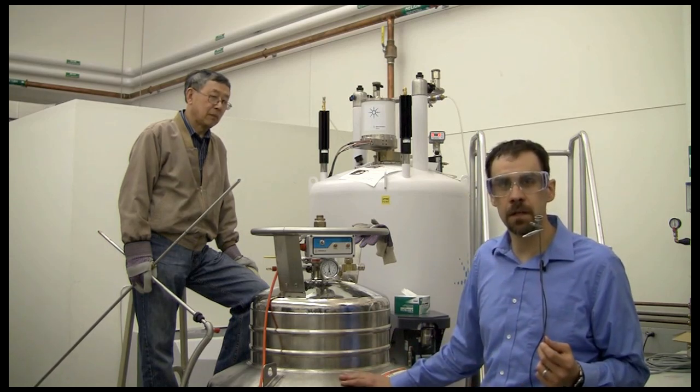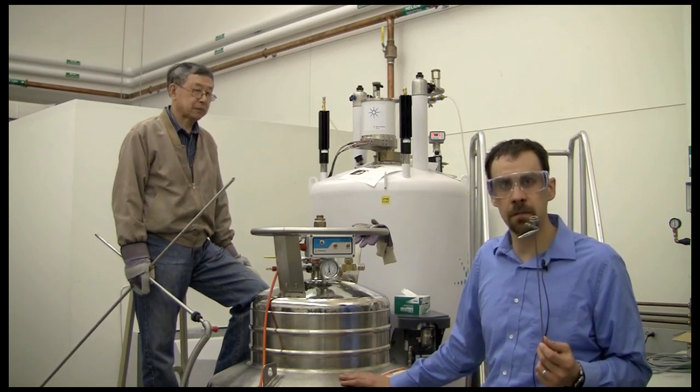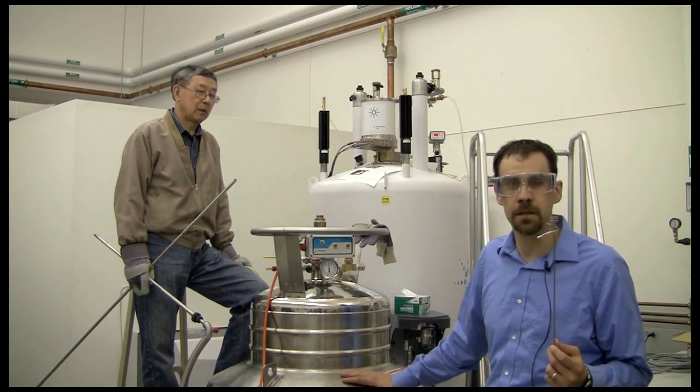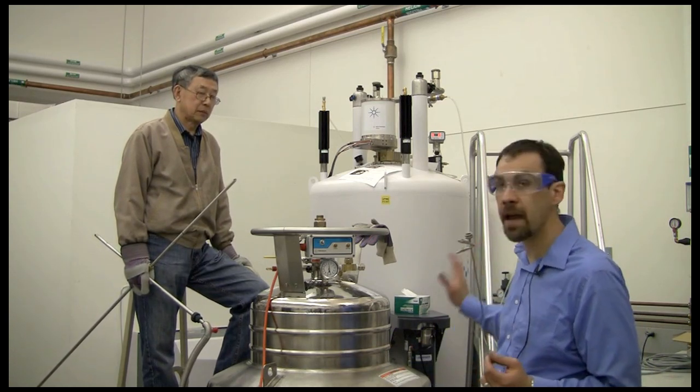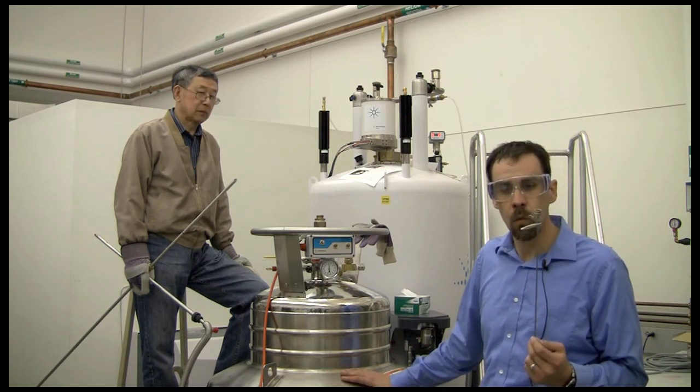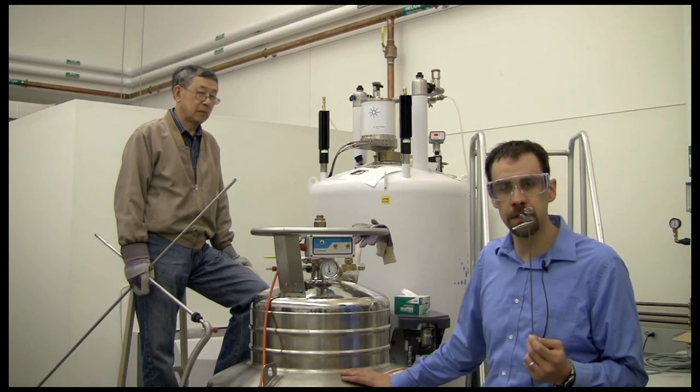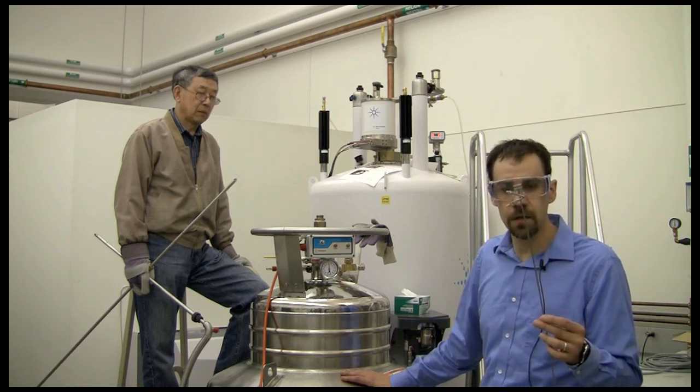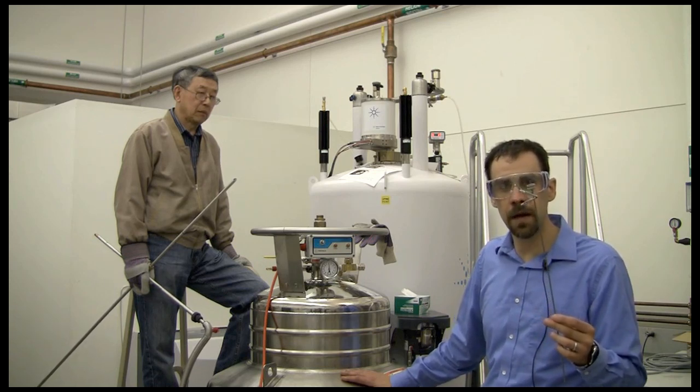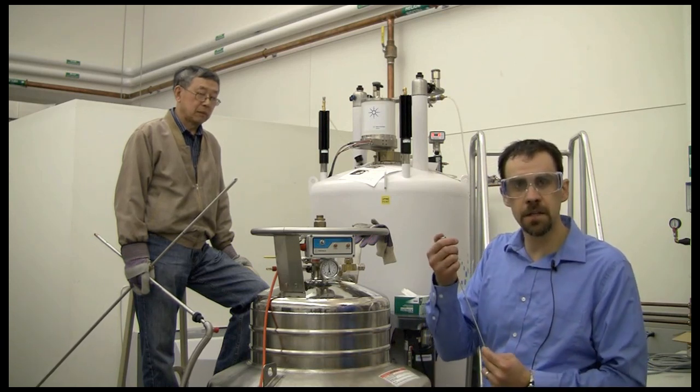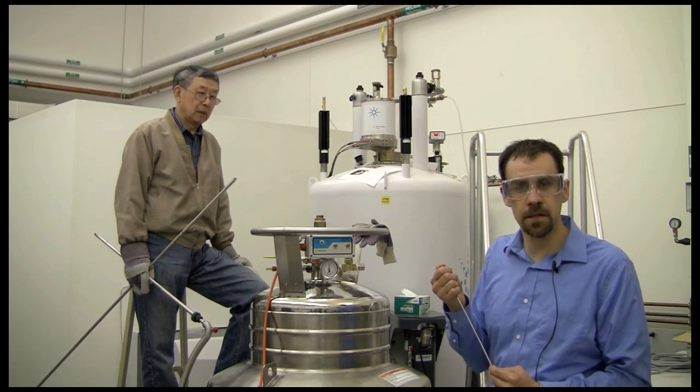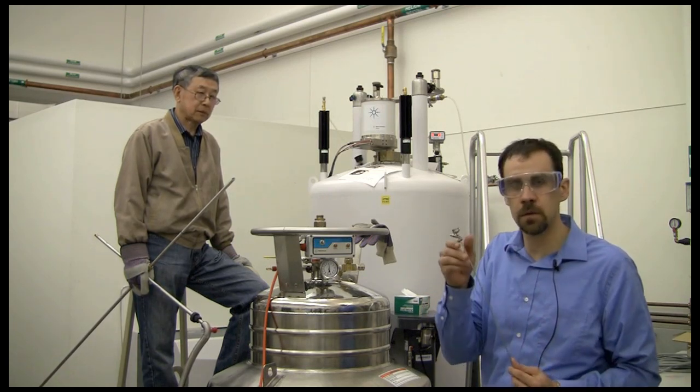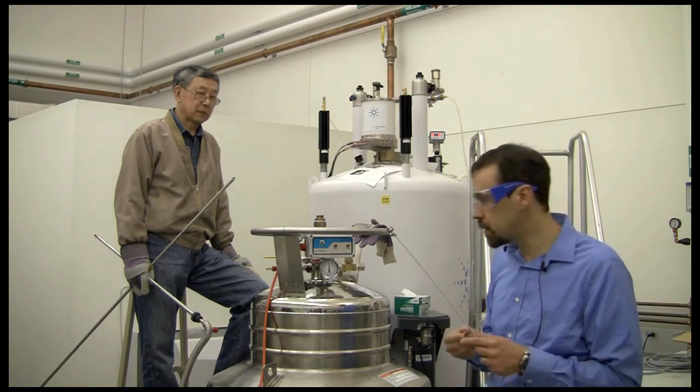Before we start transferring the helium though we need to measure the level of the helium in the dewar to make sure we don't run out in the middle of the transfer because if we run out then we could quench the magnet and that would be very bad. One way to measure the helium level is to use a thumper tube, or also called a flutter tube, which allows you to measure the helium level by feeling the oscillations, sometimes called the Taconis oscillations, that spontaneously happen when you put a tube like this into liquid helium.